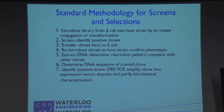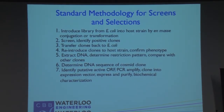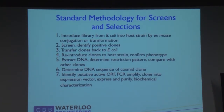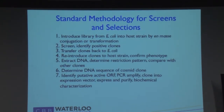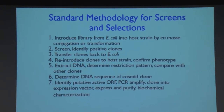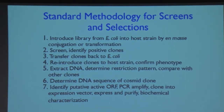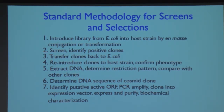Our standard methodology is: we develop screens to identify positive clones for whichever function we're interested in, transfer the clones back to E. coli, perform genetic manipulations, extract the DNA, determine the DNA sequence, and identify the actual gene responsible for the phenotype we screened for.